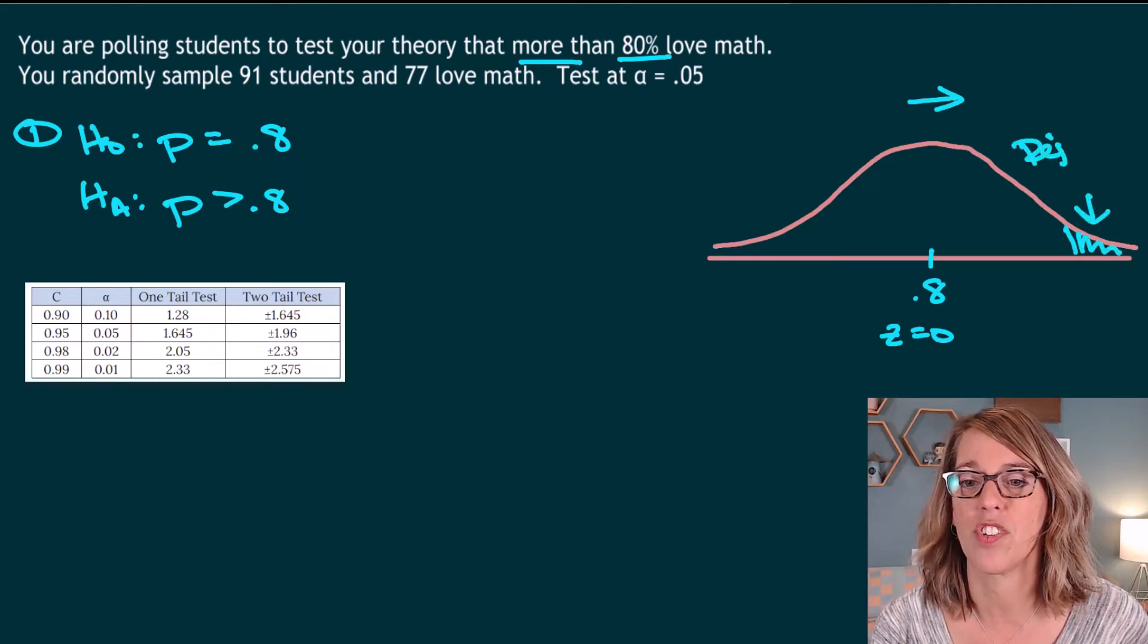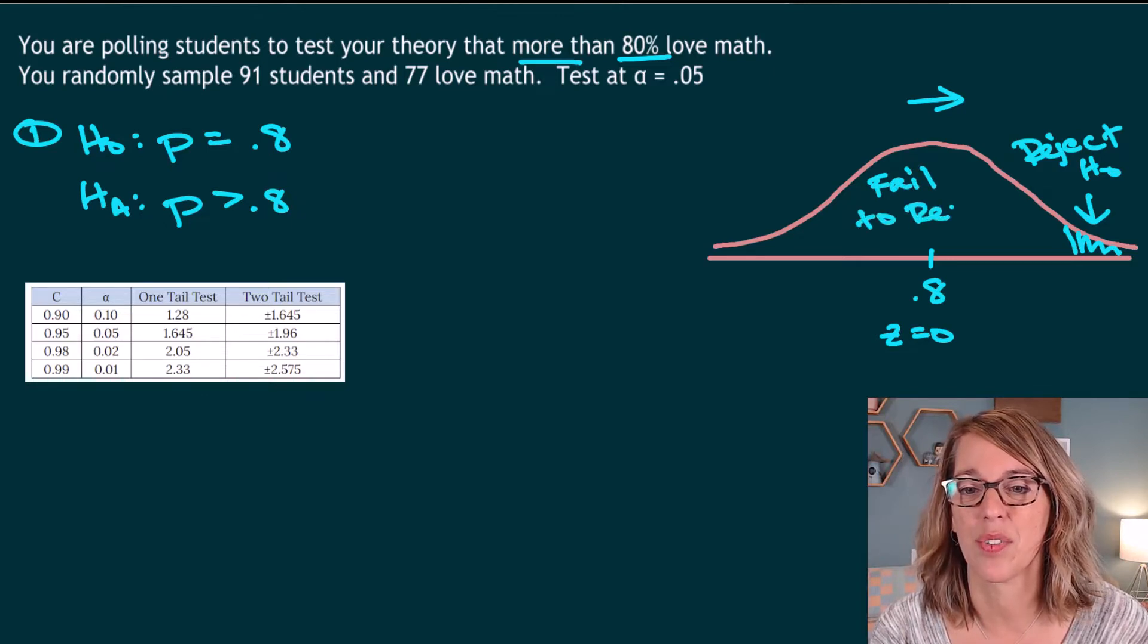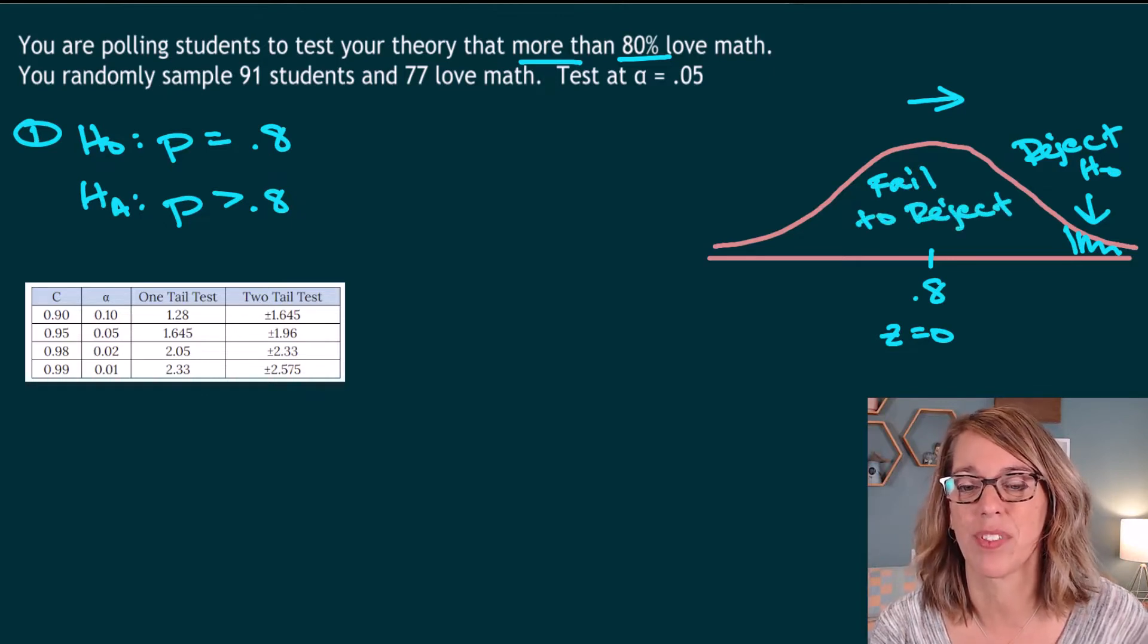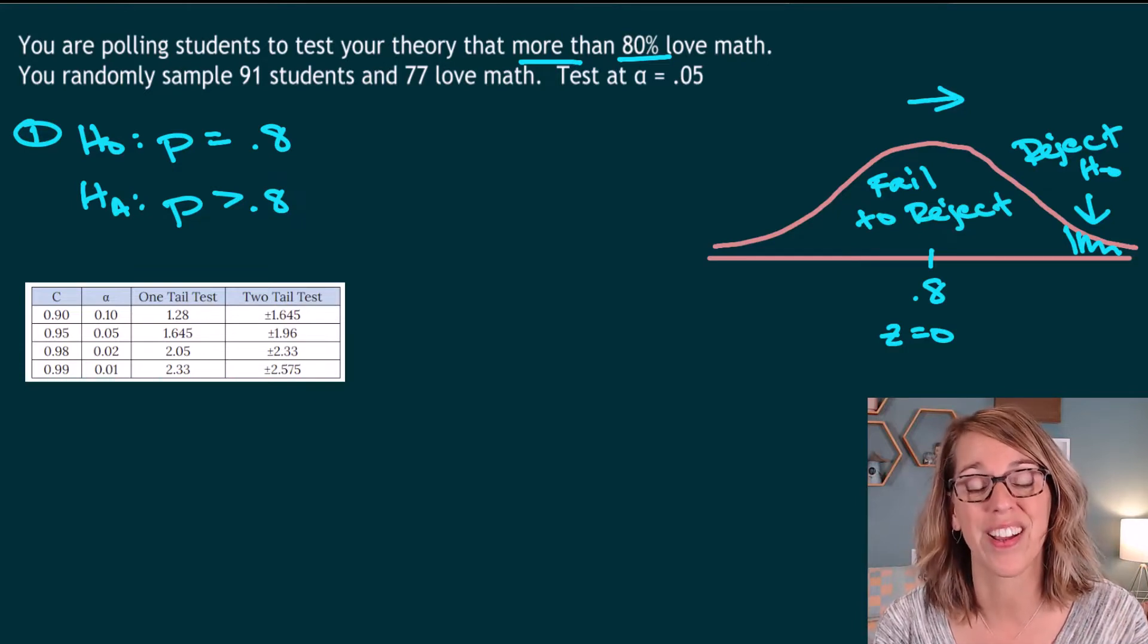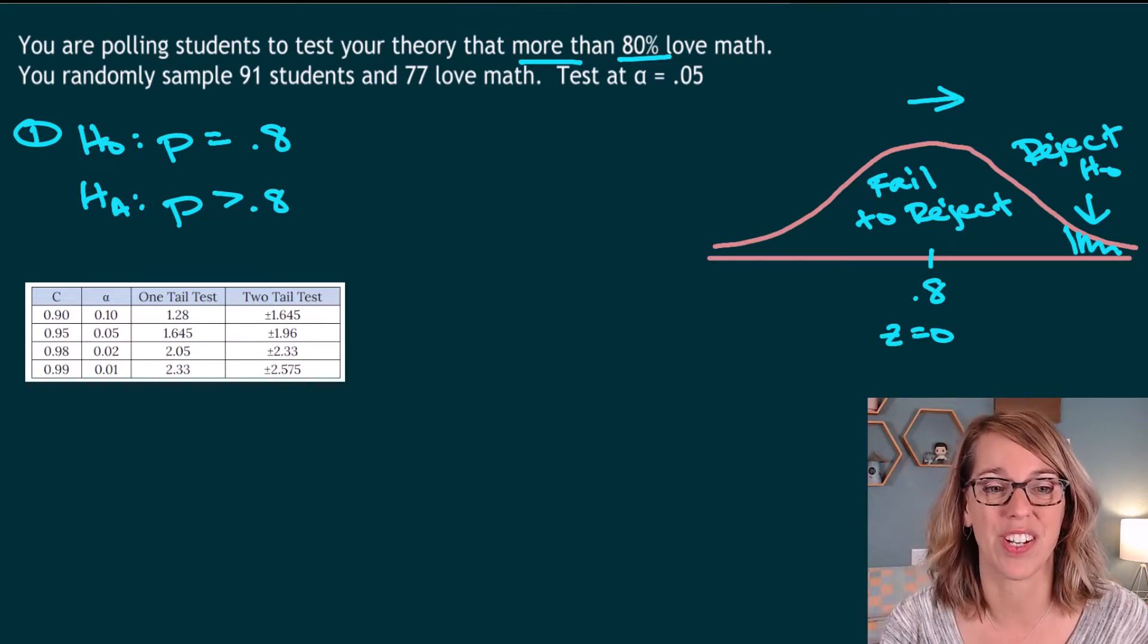So here I would reject the null hypothesis, reject H sub zero. And in the middle here, we would fail to reject that null hypothesis. So now we need a critical score and then our test Z score. And then we can go ahead and set our conclusion up.